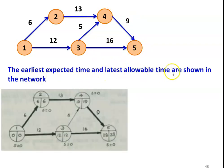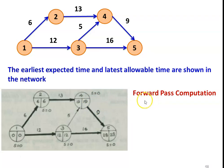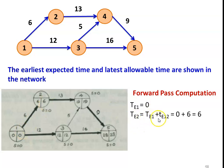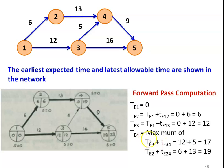The earliest expected time and the latest allowable time are shown in the network. In the event circle, we have the event number with the TE value on the left bottom and TL value on the right bottom. In the forward pass computation, we calculate the earliest expected time. For the first event, TE1 = 0. For the second event, there is only one incoming arrow: TE2 = TE1 + t(1,2) = 0 + 6 = 6. For the third event, TE3 = TE1 + t(1,3) = 0 + 12 = 12. For event 4, with two incoming activities, TE4 = maximum of (TE3 + t(3,4)) = 12 + 5 = 17, and (TE2 + t(2,4)) = 6 + 13 = 19. The maximum value is 19.